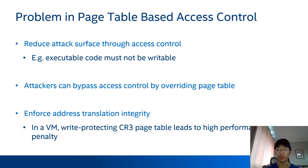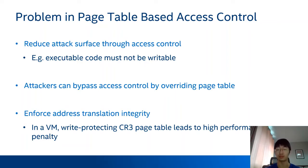Currently, access control is widely used in the Linux kernel to reduce attack surface. For example, Linux kernel marks executable code non-writable in the page table and marks data non-executable in the page table. In general, page table-based access control is efficient. But in theory, if an attacker can write to arbitrary memory by exploiting some kernel vulnerabilities, they could override the page table and bypass access control enforced by the page table. So to defend against attacks that override the page table, we need to enforce address translation integrity.